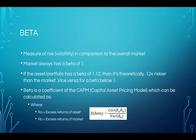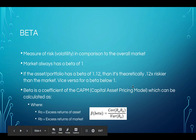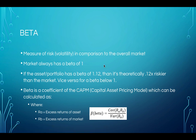Beta is basically a measure of volatility. The market has a beta of one. If you're above it, you're theoretically more risky than the market; if you're below it, you're theoretically less risky. We can extract the beta coefficient from the CAPM model. I'm not going to go crazy into the mathematical detail.